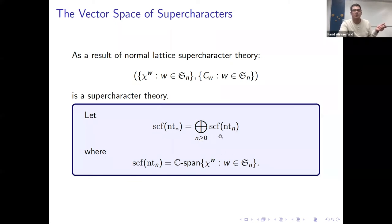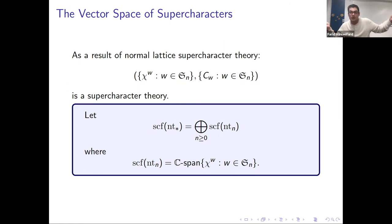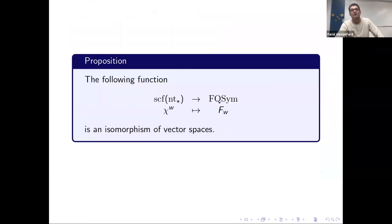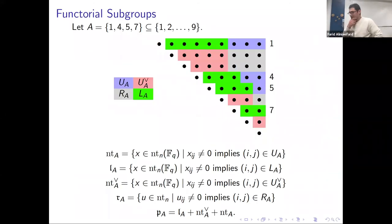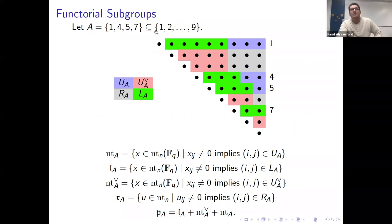I make a vector space out of these supercharacters and glue them all together into a graded vector space. In each degree the dimension is n!, so as a vector space it is isomorphic to the Malvenuto-Reutenauer Hopf algebra. But I need to define a product and coproduct to make it isomorphic as a Hopf algebra. For the product I need a series of groups: I pick a subset A of {1,...,9}, construct a 9×9 matrix, and mark blue, green, gray, and red regions.